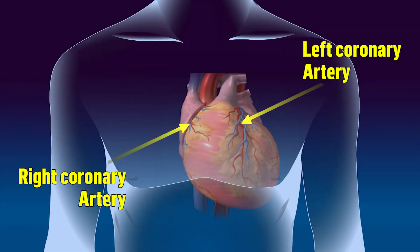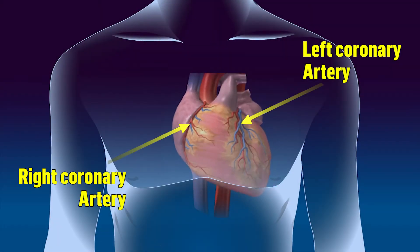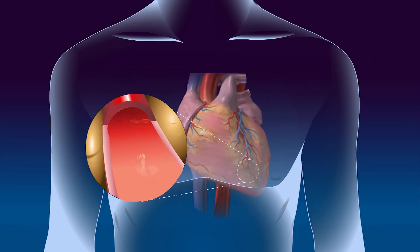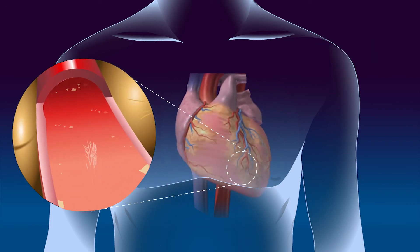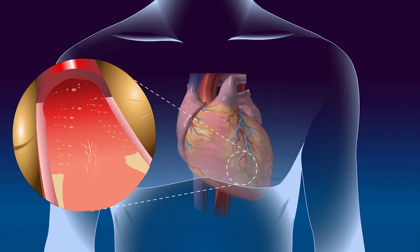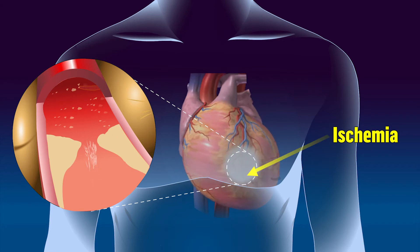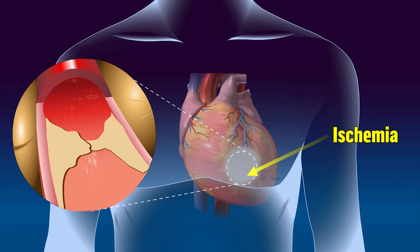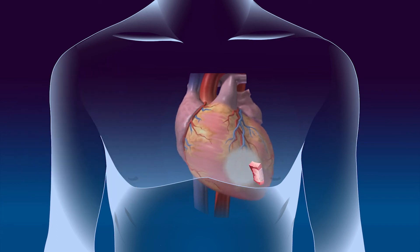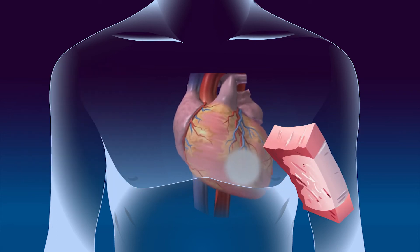The heart muscle gets its oxygen supply from the coronary arteries. When blood flow within an artery is obstructed, heart muscles normally fed by that artery can begin to die. The initial lack of oxygen is called ischemia. If allowed to continue, it causes injury to the myocardium.